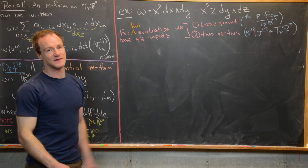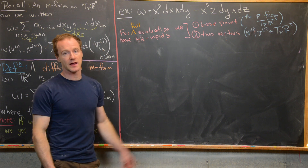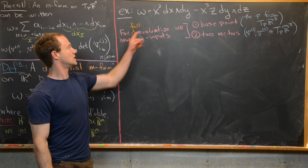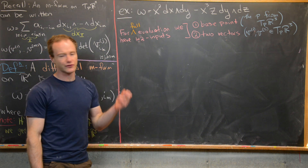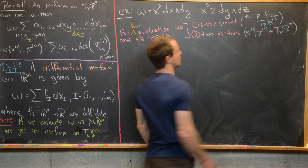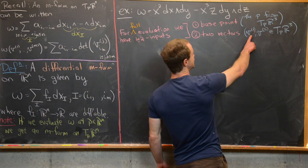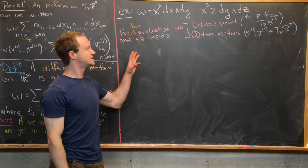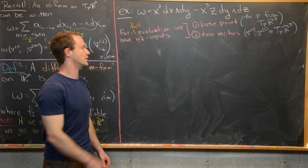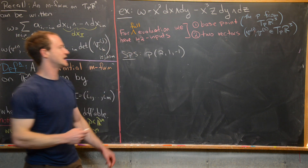Let's look at an example. Suppose we've got this differential 2-form on R³: omega = x² dx ∧ dy − x³z dy ∧ dz. For a full evaluation we have one plus two inputs — three total. One input is a base point P in T_p(R³), and then two more inputs are vectors V^1 and V^2 in T_p(R³). Let's pick base point P = (2, 1, −1) and do one stage of evaluation.